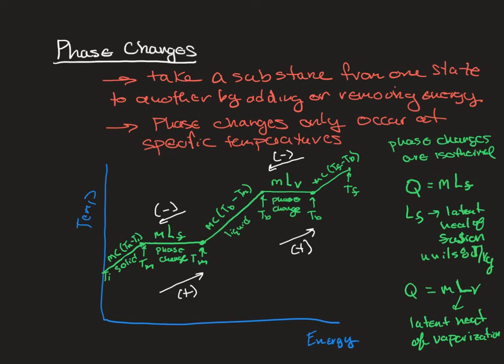I encourage you to make use of a graph like the one drawn here as you do problems. You can draw the entire structure and then label where you're starting and where you're ending. For example, if you're starting in the liquid phase, your initial temperature would be placed there — that changes what Ti is. And if your final temperature is in the gas phase, you would use the liquid heating segment with Ti as the starting temperature, then the vaporization phase change, and then the gas heating segment.